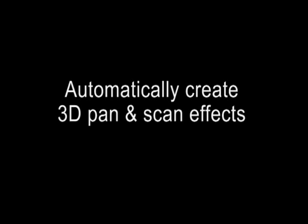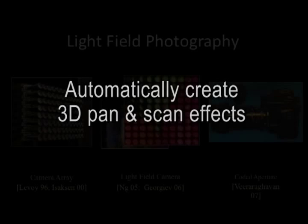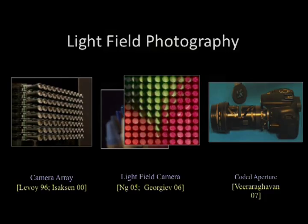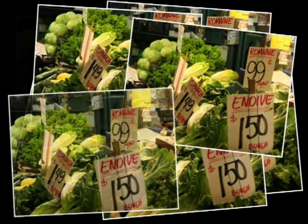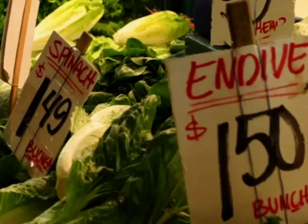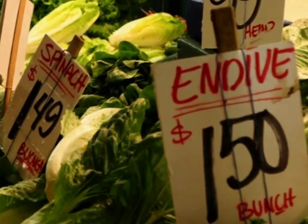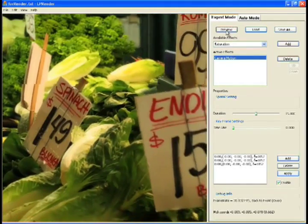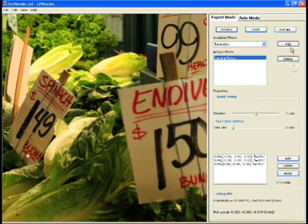In this paper, we look at how 3D pan and scan slideshows can be created much more easily. We use a small portion of a light field and depth information. This data could be captured with a light field camera and depth inferred using multi-view stereo. In our specific implementation, we build a light field from a few photographs and a handheld camera. Using this data, we automatically produce a 3D pan and scan effect, allowing users to influence and edit the result.